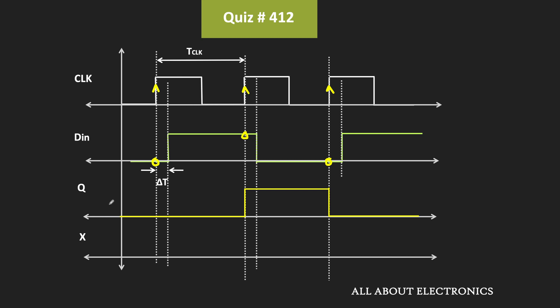This Q output is XORed with the data signal using the XOR gate. For the XOR gate, whenever both inputs are different, its output will become 1. Whenever both inputs are either both 0 or both 1, its output will remain 0. So the output is equal to 1 when both inputs DIN and Q are different, and 0 when both inputs are the same.